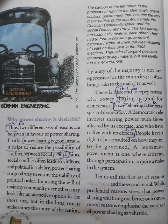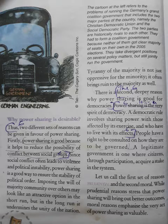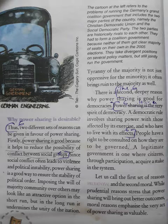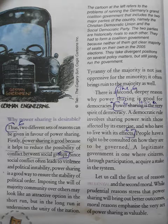Ek ke haath mein agar power de di — jaise majority ko saari powers de di — toh kya hoga? Ek ke haath mein power ka matlab hua dictatorship. But here we are talking about democracy. Majority ke haath mein agar power de di, toh majority apne favor mein saari decisions legi — jaise hua Sri Lanka mein. Majority ko de di power, toh kaun dissatisfied hoga? The minority community — the Tamils.